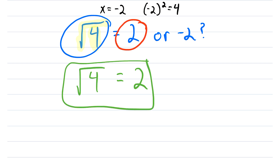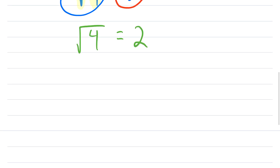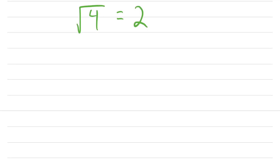And again, this is true because this notation, with the radical symbol, refers specifically to the principal square root of 4. The principal square root of a non-negative real number is the non-negative square root. And the reason I say non-negative instead of just saying positive is, of course, because the principal square root of 0 is just 0, and 0 is not positive.